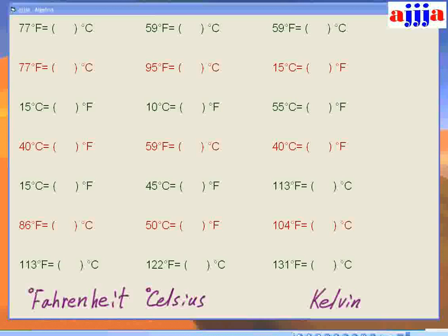Now a different one — 95°F. Minus 32 gives us 63. Divide by nine — that's 7. Times five — which is 35. So 95°F equals 35°C. So easy!